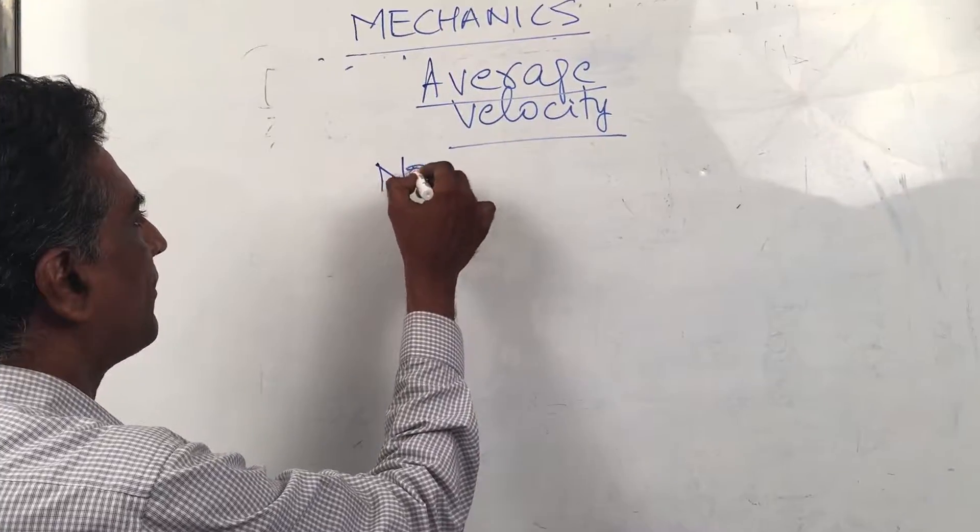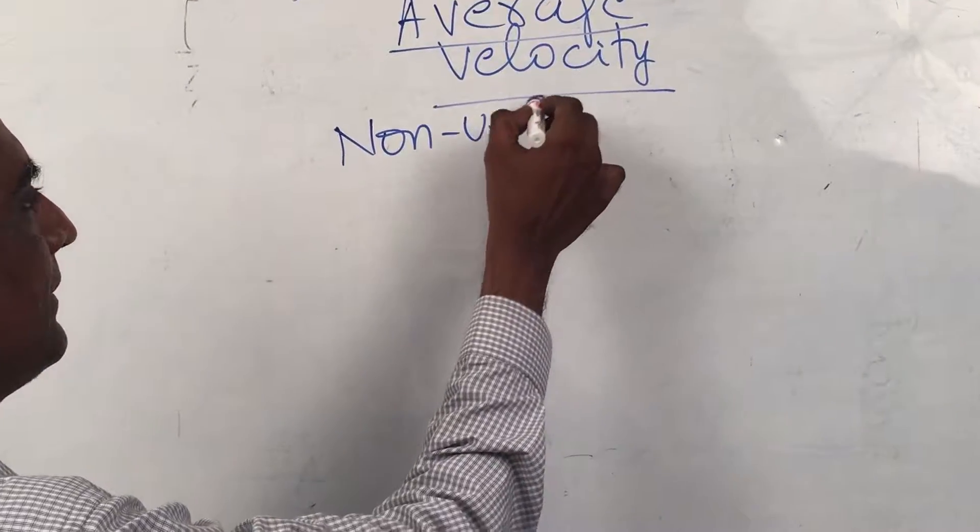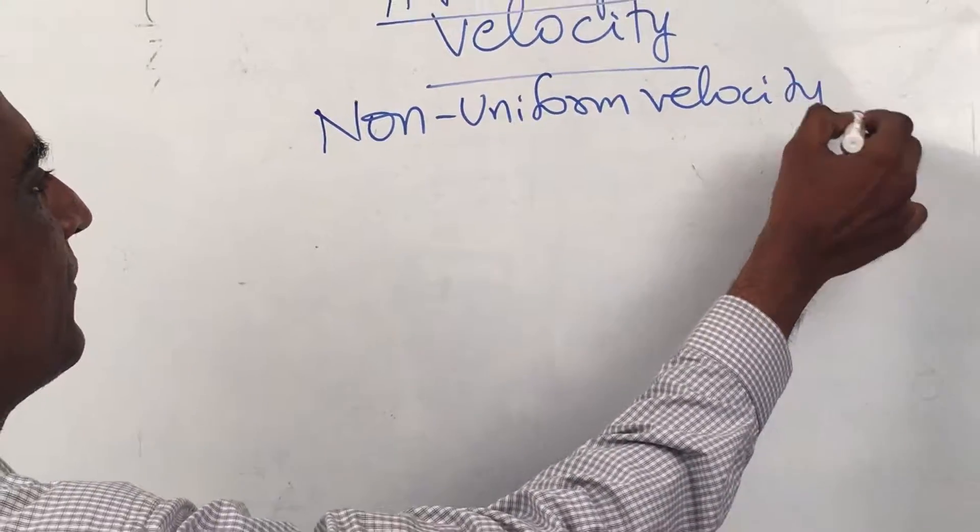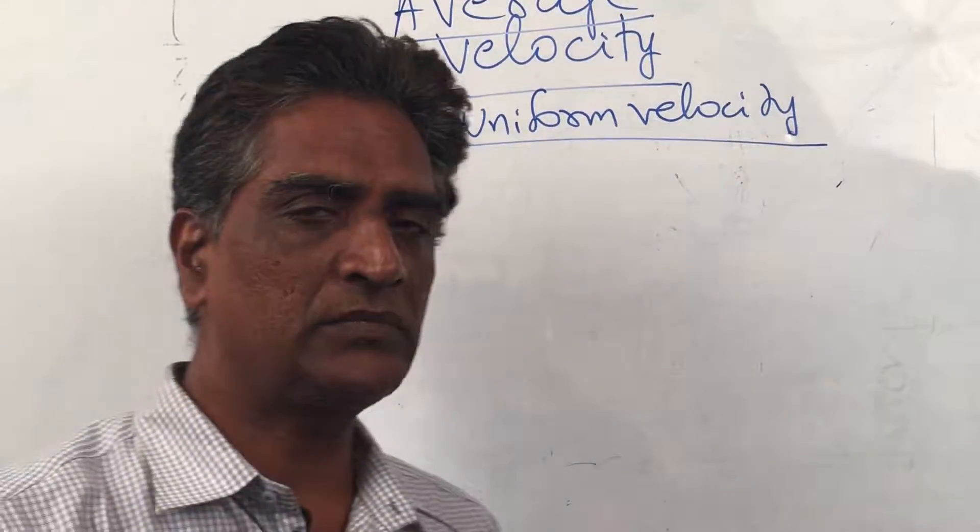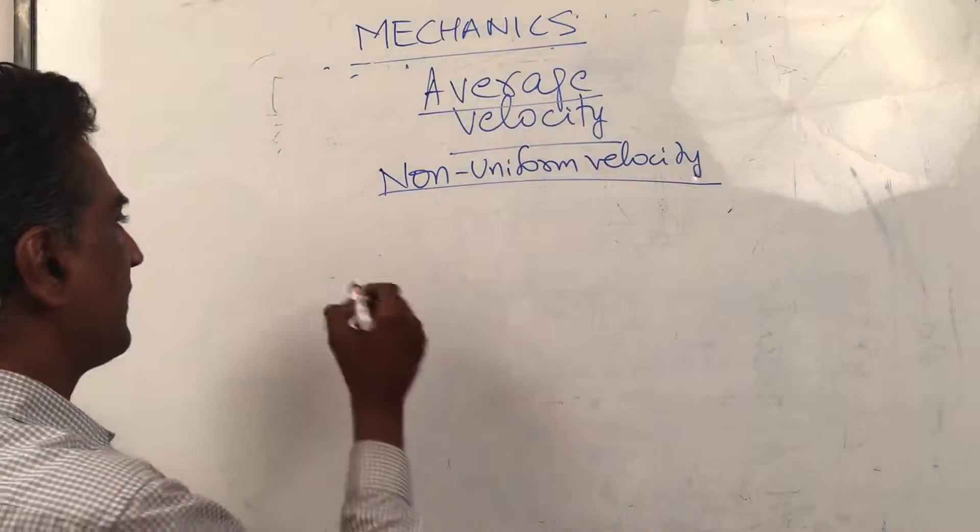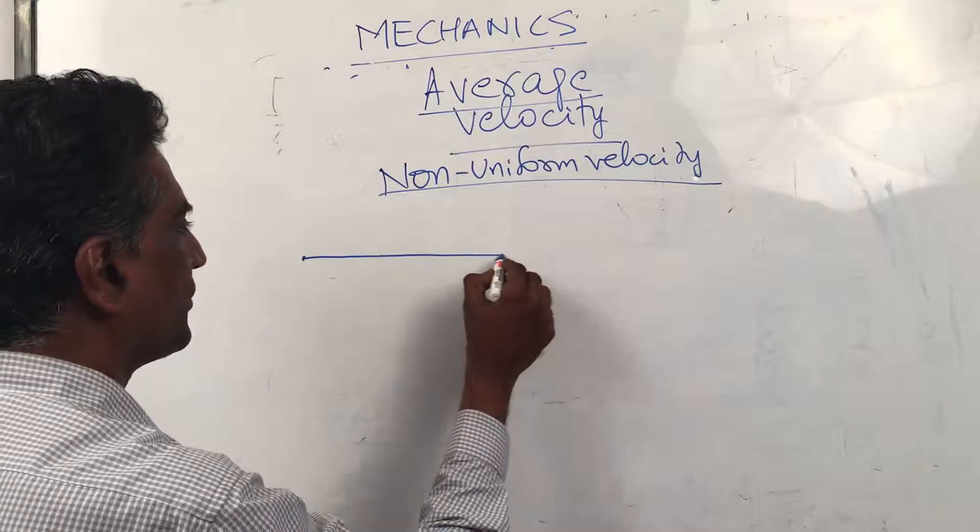...non-uniform velocity. In the last lesson we saw uniform velocity, so non-uniform velocity is simply put how it is in real life. If you have to put it in one-dimensional motion...